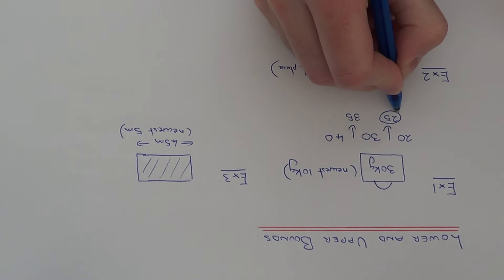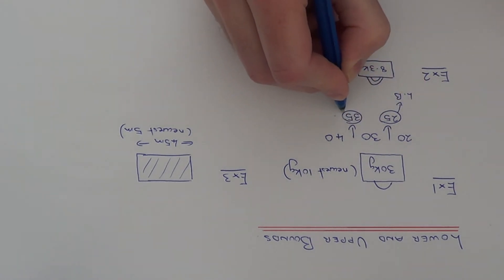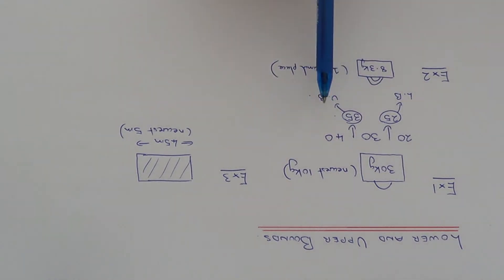So this would be the lower bound and this will be the upper bound. So the suitcase's weight could be between these two values. So let's take a look at example two.